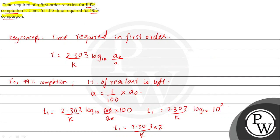So time required of a first order reaction for 99% completion is 2 times the time required for 90% completion. So I hope you understood this question. Thank you.